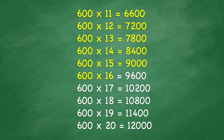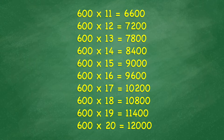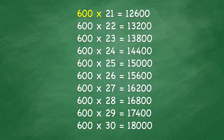600 times 16 equals 9,600. 600 times 17 equals 10,200. 600 times 18 equals 10,800. 600 times 19 equals 11,400. 600 times 20 equals 12,000. 600 times 21 equals 12,600. 600 times 22 equals 13,200. 600 times 23 equals 13,800.